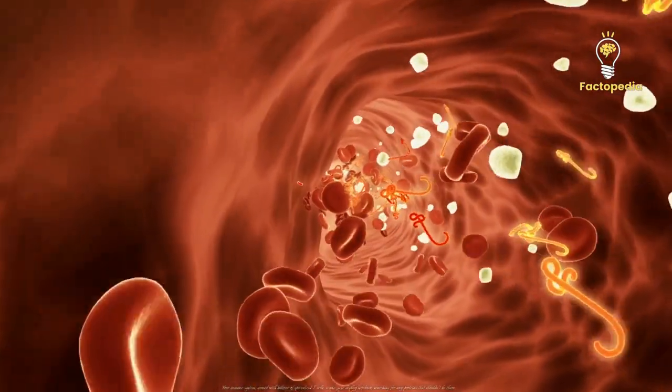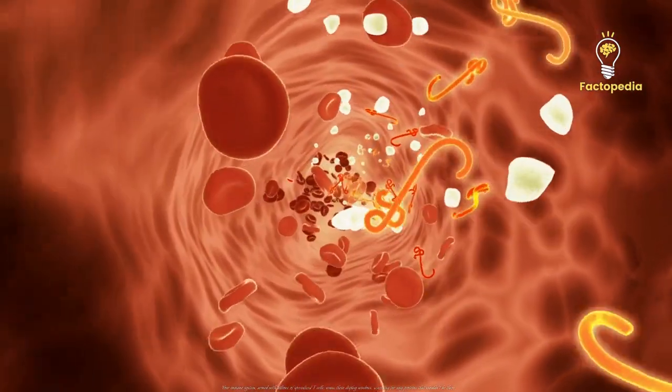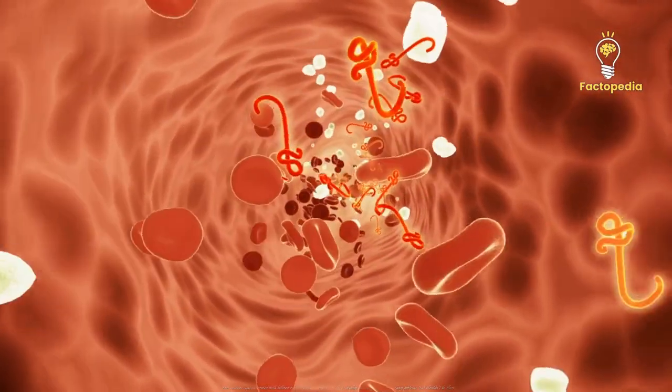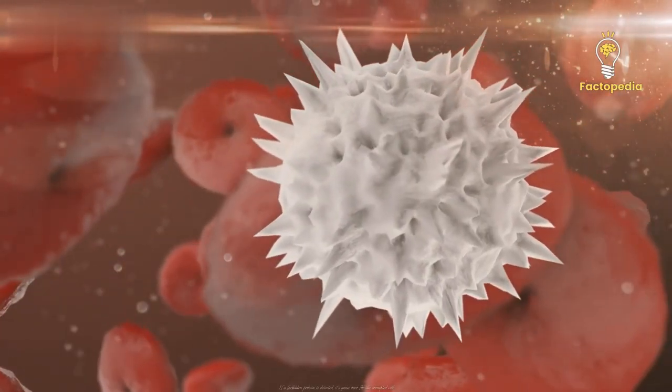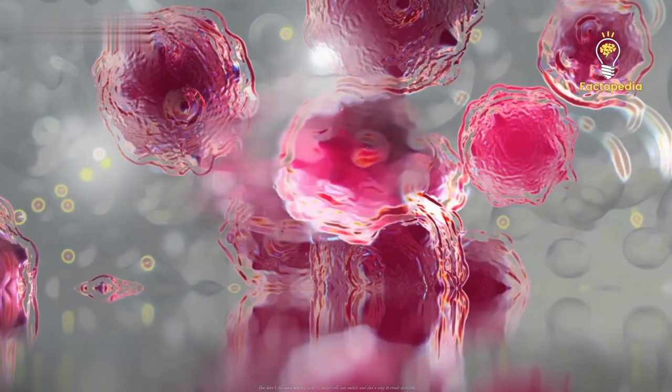Your immune system, armed with billions of specialized T cells, scans these display windows, searching for any proteins that shouldn't be there. If a forbidden protein is detected, it's game over for the corrupted cell. But here's the mind-blowing twist.